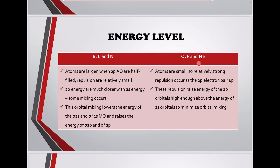For oxygen, fluorine, and neon, atoms are small, so relatively strong repulsion occurs as the 2p electrons pair up. This repulsion raises the energy of the 2p orbitals high enough above the energy of the 2s orbitals to minimize orbital mixing.